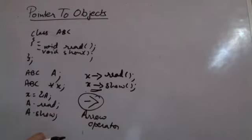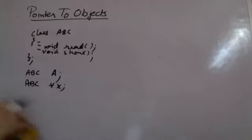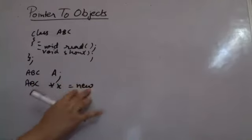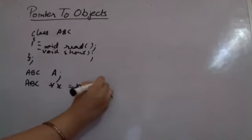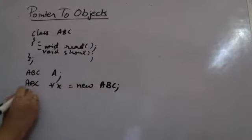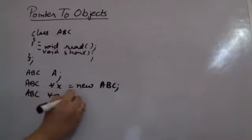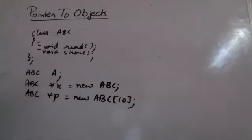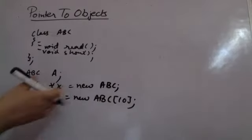We can also create a new object dynamically by writing 'ABC *x = new ABC', which allocates space dynamically. We can also create an array of objects: 'ABC *p = new ABC[10]' will create an array of 10 objects dynamically, and the base address of that array will be stored in p. This is how you create pointers to objects and even arrays of objects.